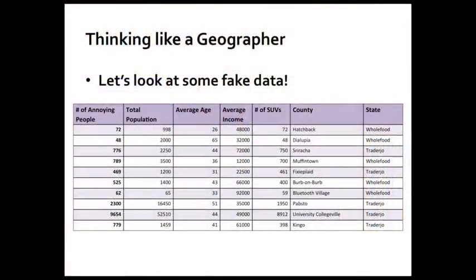A good way to start exploring this further is by trying to think aspatially first. So we're going to think without trying to consider space. We're going to try to do that for a minute. We'll see how hard it is. Let's look at some fake data. This is always a fun way to look at a problem. So I've created some fake data here. This is a table showing the number of annoying people, the total population, average age, average income, the number of sport utility vehicles, and then county and state names. But don't think too much about those yet, because we're trying to think aspatially.